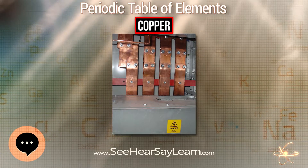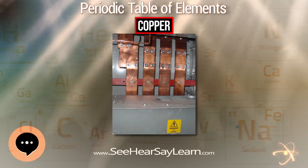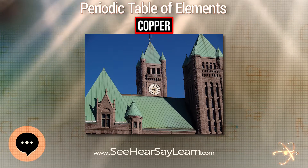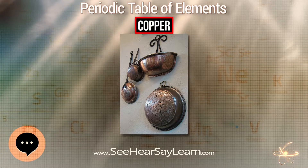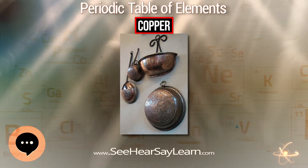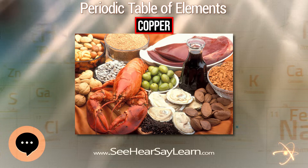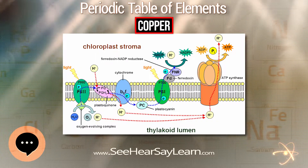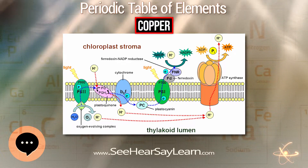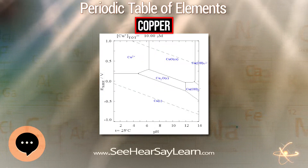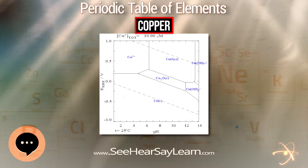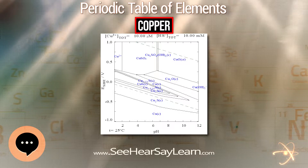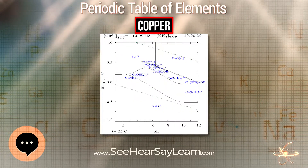Copper sulfate forms a blue crystal in pentahydrate form, the most familiar copper compound in the laboratory. It is used in a fungicide called the Bordeaux mixture. Polyols — compounds containing more than one alcohol functional group — generally interact with cupric salts. Copper salts are used to test for reducing sugars using Benedict's reagent and Fehling's solution, signaled by a color change from blue Cu²⁺ to reddish copper oxide. Schweizer's reagent and related complexes with ethylenediamine and other amines dissolve cellulose.